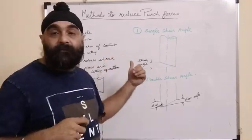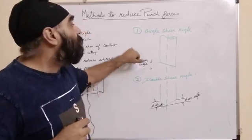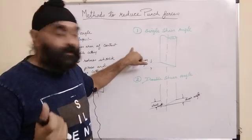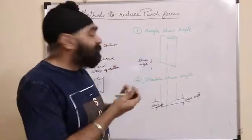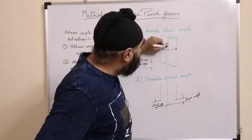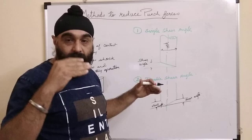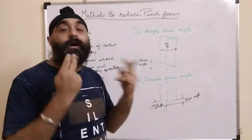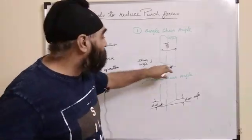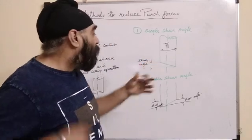First method is single shear angle. If I have a punch, say diameter 20mm, if I need to reduce cutting contact area, what I will do is give some angle to the punch.